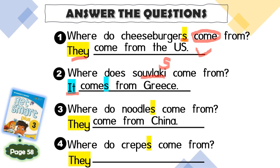What about the third one? Where do noodles come from? They come from China. Why don't we add S here? Because the subject is plural. What about number four? Where do crepes come from? Can you see the S here? It means the subject is plural. So if the subject is plural, you don't add any S after the verb. The answer is: they come from France.